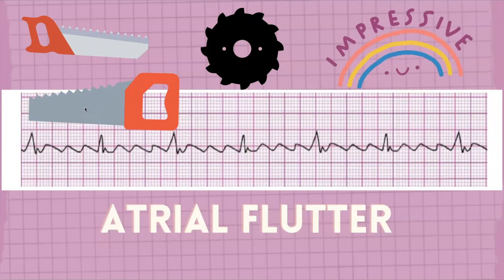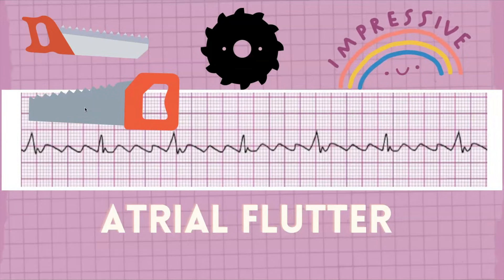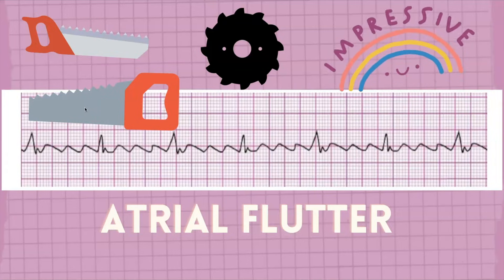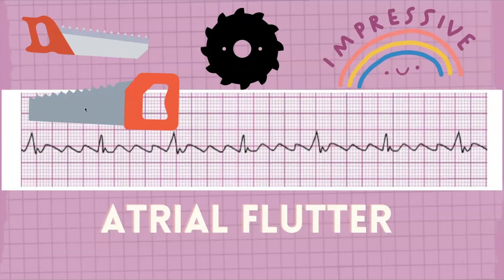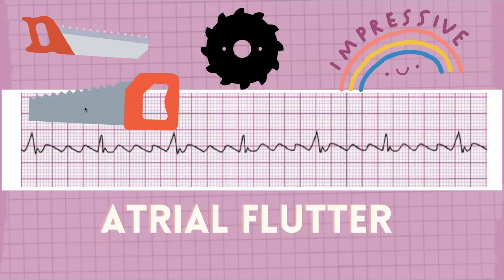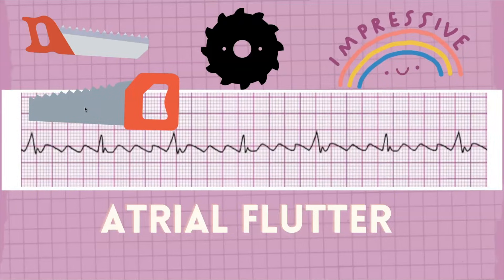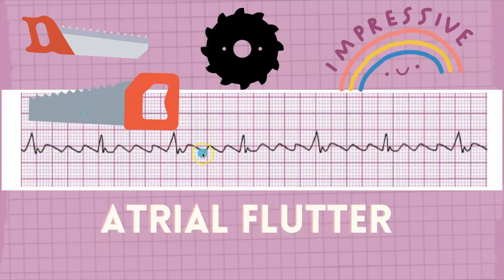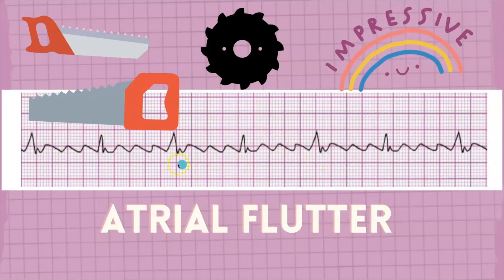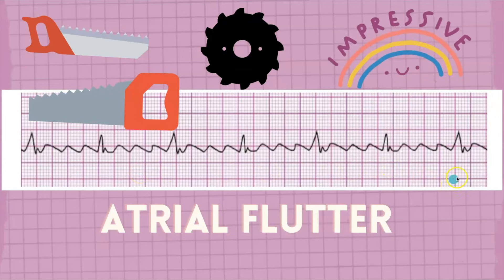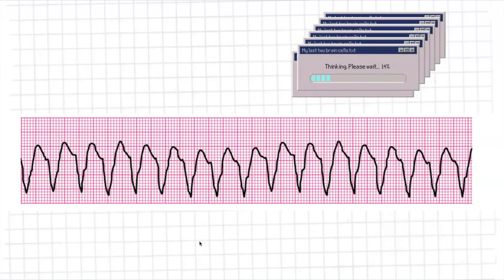With atrial flutter, the P wave rate can range from 200 to 300. The P waves can have a ratio — like two P waves per one QRS complex, or three P waves per one QRS complex. Here we're seeing a three-to-one ratio. For ACLS they're not going to ask you what the specific ratio is — just by looking at the sawtooth pattern you can identify this as atrial flutter.